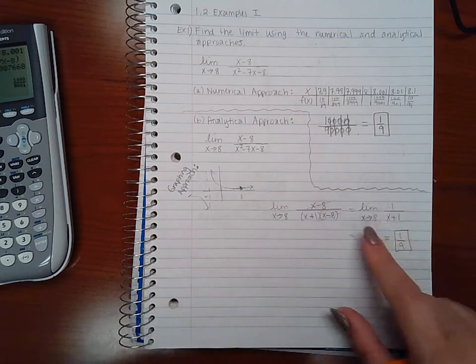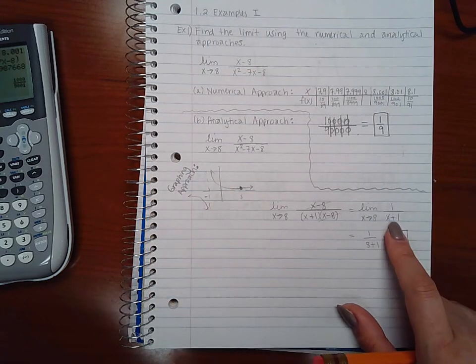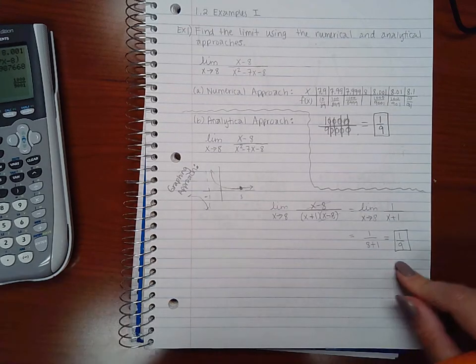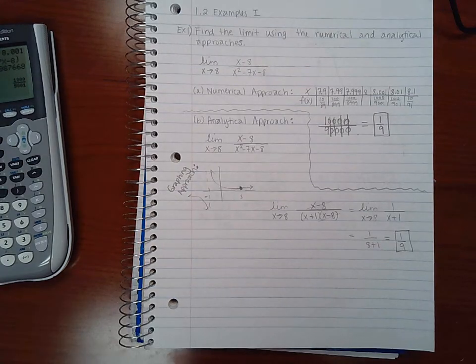And if I substitute 8 into my new function, I get 1 over (8 + 1), which is exactly the same value as we got before, 1 over 9.